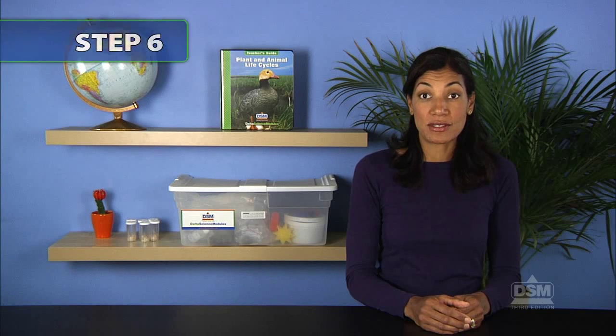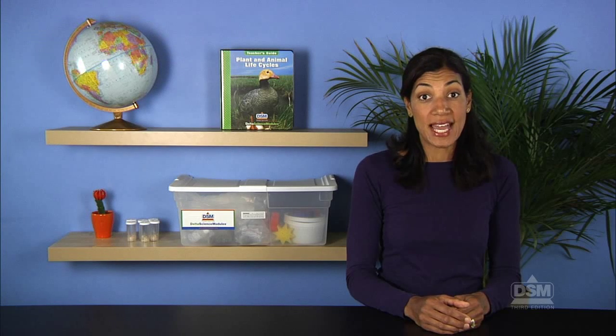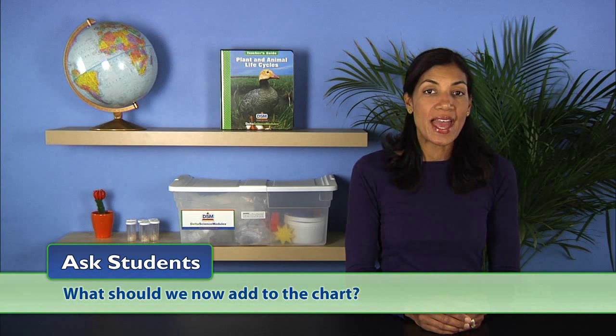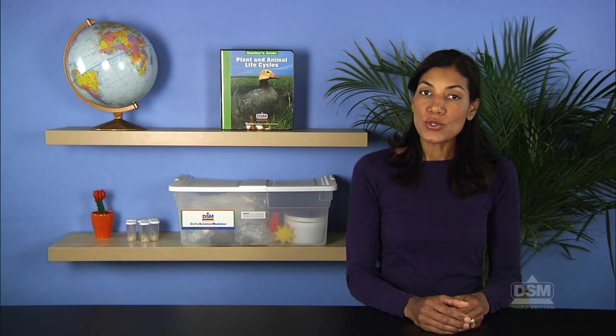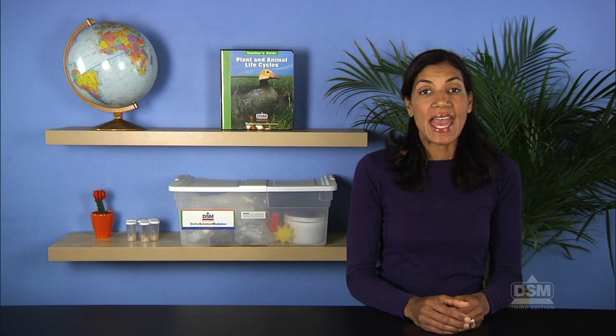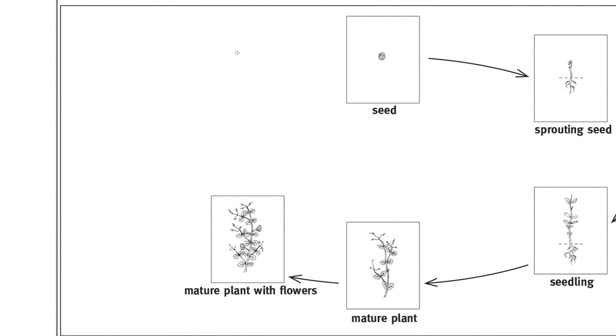Next, bring students' attention to the pea lifecycle chart and ask, what should we now add to the chart? Students should add a mature plant with seed pods. Have a volunteer show where to put the picture on the chart and tape it in place. Label it mature plant with seed pods and draw an arrow from the plant with flowers to the plant with seed pods.